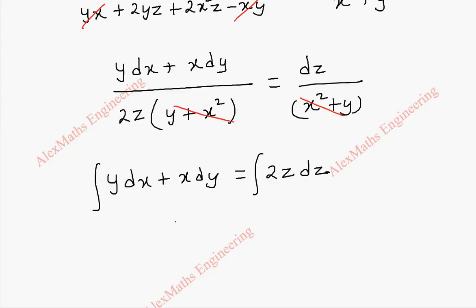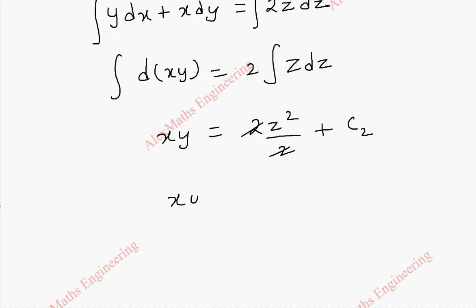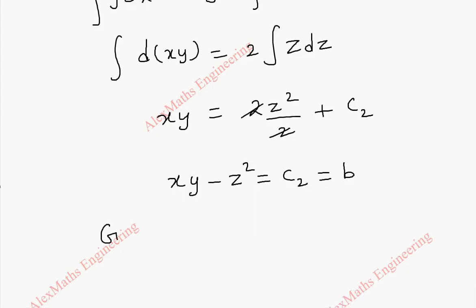Integrating both sides: the left side y·dx + x·dy is actually the differentiation of xy by the product rule (x·dy + y·dx). So integrating gives xy. The right side: integrating 2z·dz gives 2·z²/2 = z². So: xy = z² + c₂, which means xy - z² = c₂, named as b.